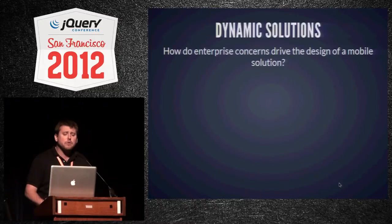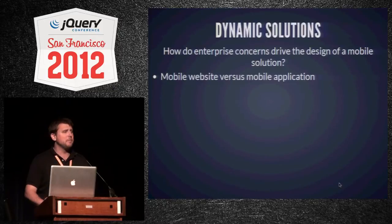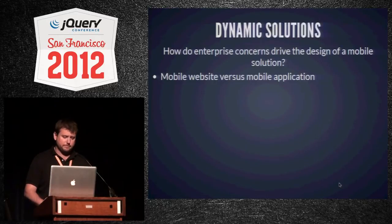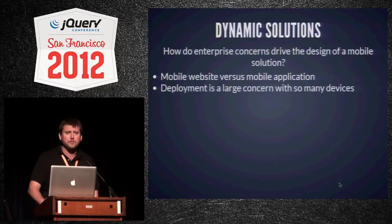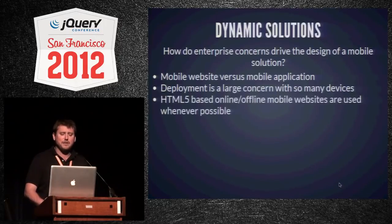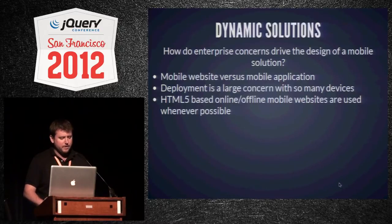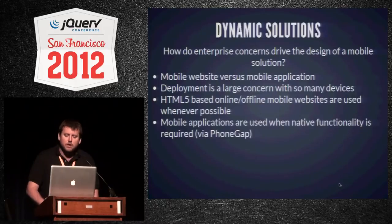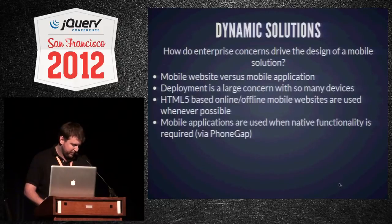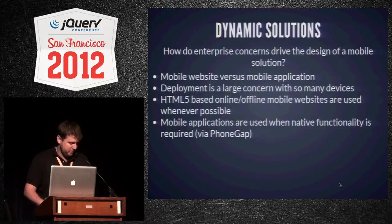The first decision is whether to use a mobile website or a mobile application. In the case of the city, we decided we need both. Deployment is a large concern with so many devices, so if we can use an HTML5-based online/offline website delivered through the mobile browser, that's the best solution. Unfortunately, some departments need native functionality — for example, a demolition inspection requires pictures before a demolition permit can be issued. To achieve native functionality, we use a tool called PhoneGap.